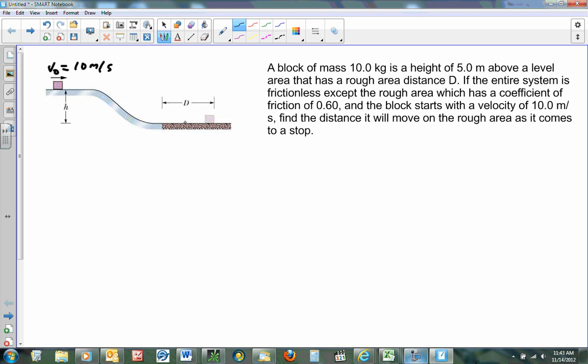And it is at a height of 5 meters above this level area here. We want to know, given that it's all frictionless except for this rough area, how far will it move? What distance D will it move before it comes to a stop if the coefficient of friction on this area is 0.6?